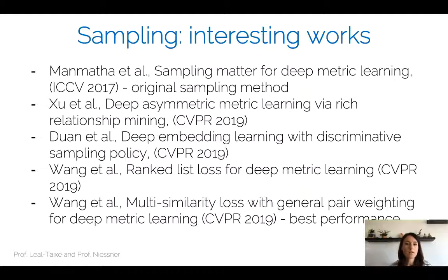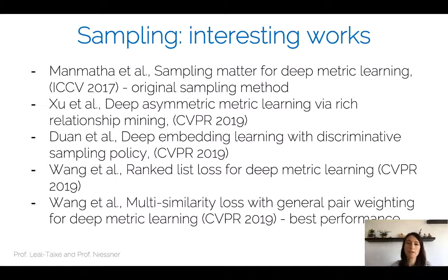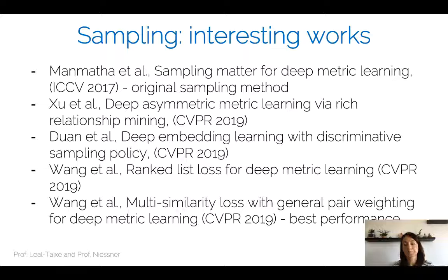A key reference for sampling methods is the ICCV 2017 paper 'Sampling Matters in Deep Metric Learning', which proposes sampling strategies for diverse and hard cases. Several follow-up works further improve training of neural networks for metric learning through more clever sampling.